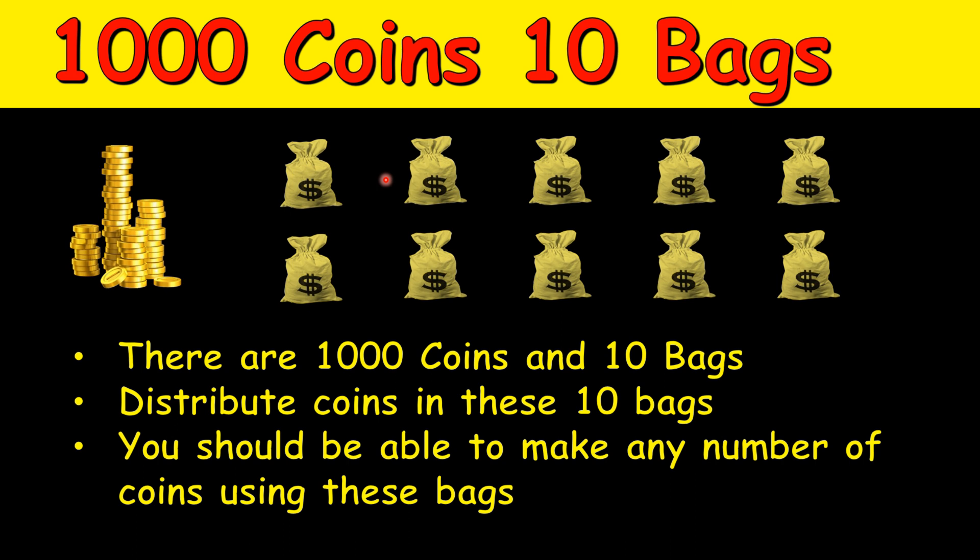Each bag will have some number of coins. If somebody asks you for 30 coins, you should give them one or more bags such that the count is exactly 30. You are not allowed to change the content of the bags once you put the coins in these 10 bags. The goal is: what number of coins should you keep in each of the bags so that you are able to make any number from 1 to 1000?